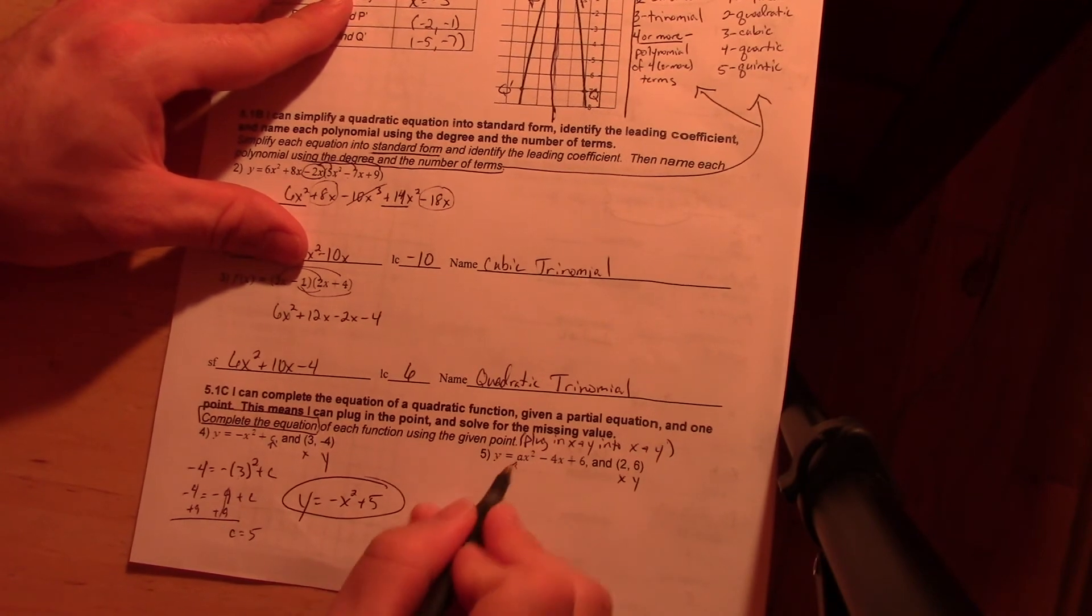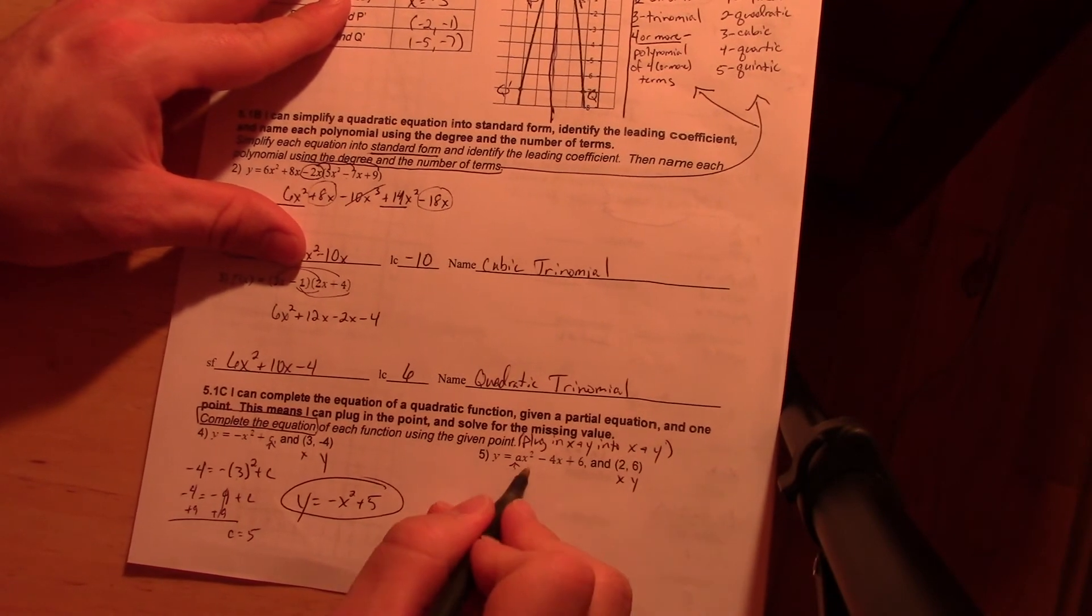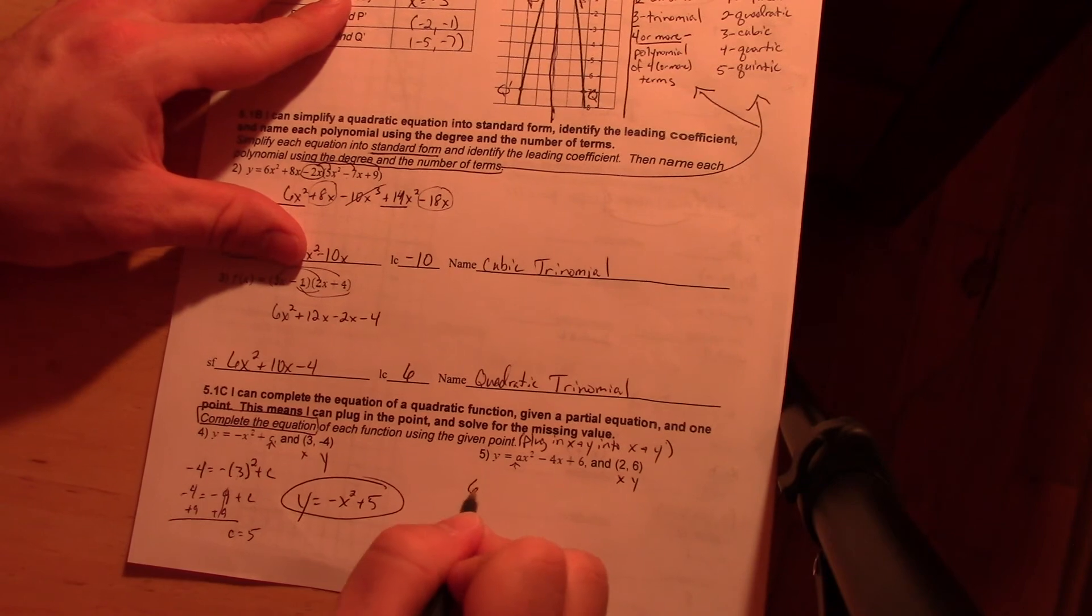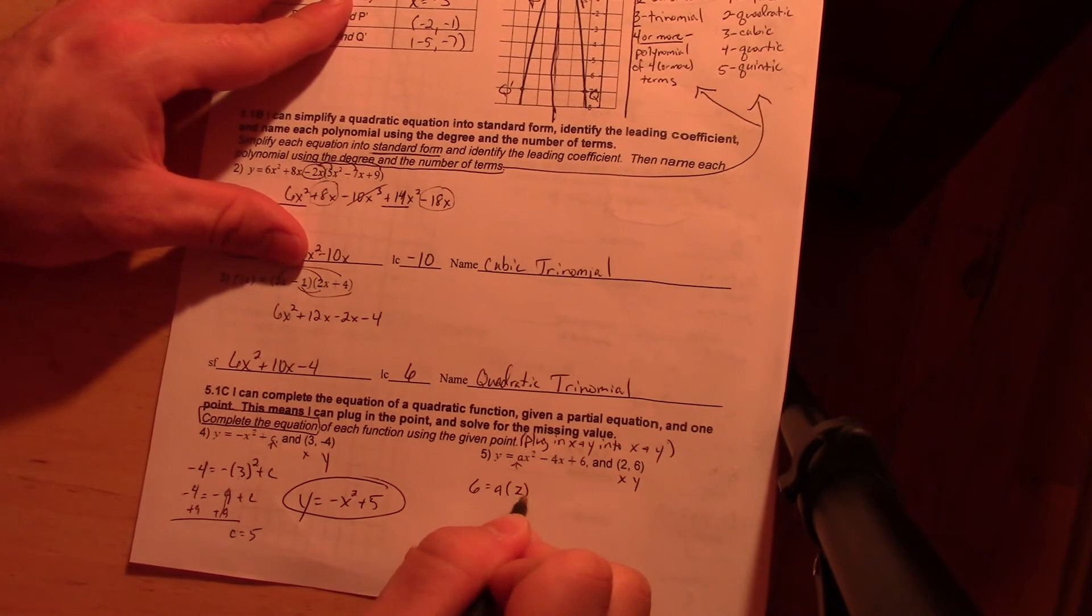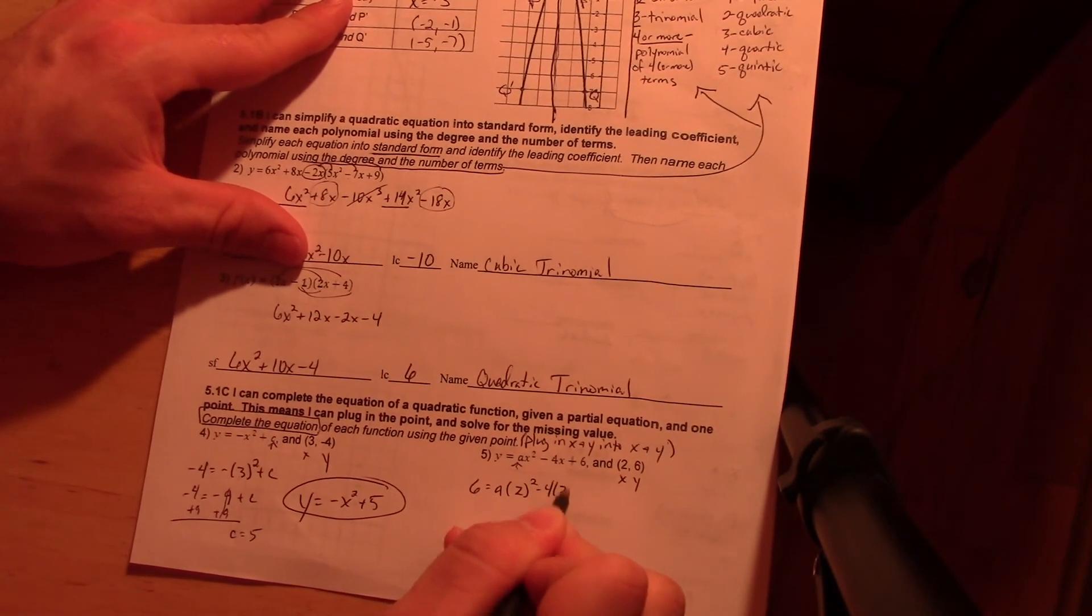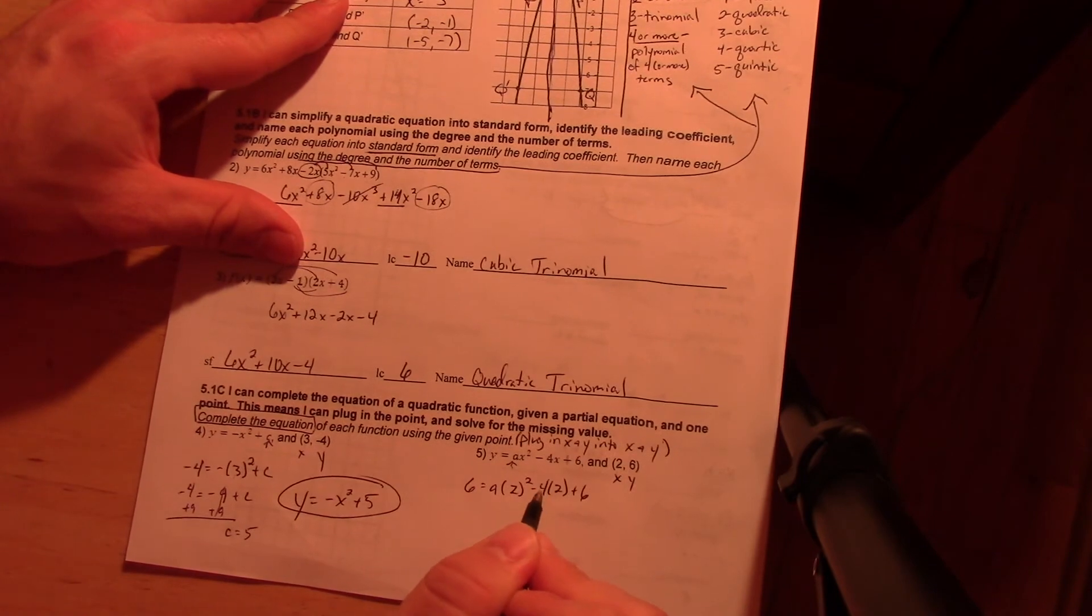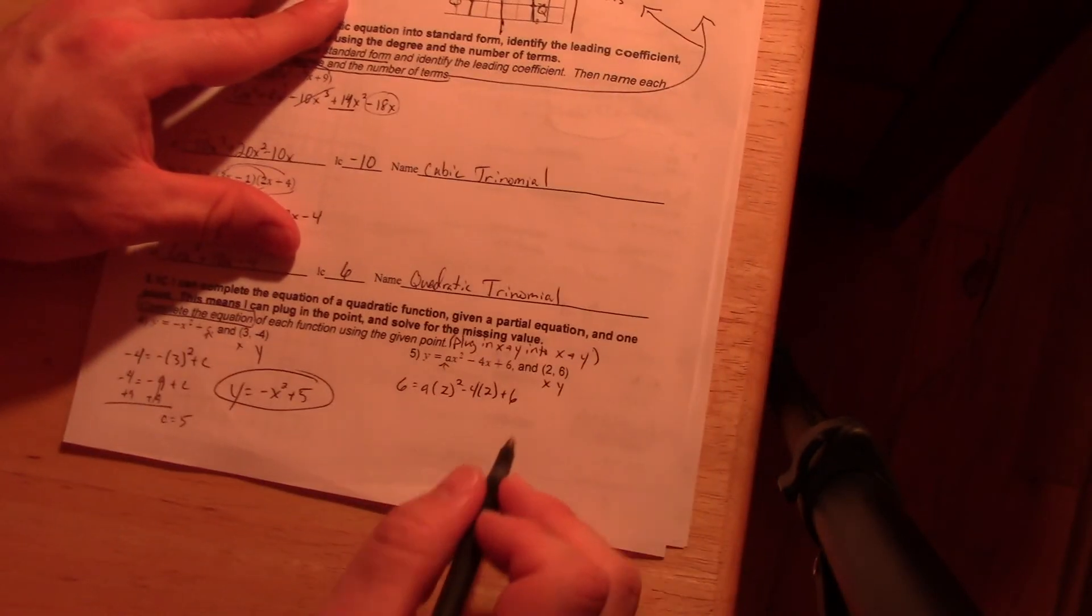Now in this problem, I'm going to plug it in right here in the very end. Plug x into x and y into y. And there's multiple x's here, be careful. 2 squared minus 4 times 2 plus 6. And let me move this up just a little bit here, sorry.